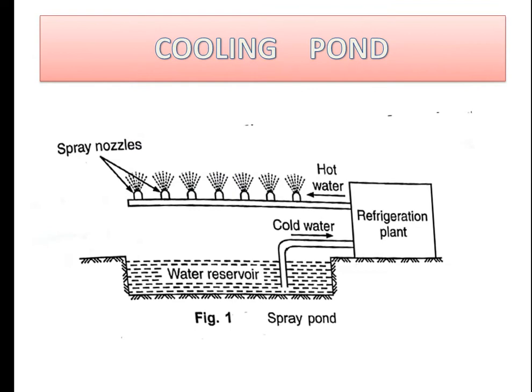This is a simple diagram of a cooling pond which shows its working. The hot water comes out of the refrigeration plant as it absorbs heat from the refrigerant. It flows through the passage and through the nozzle where it is sprayed and broken into small particles to facilitate the evaporation process.